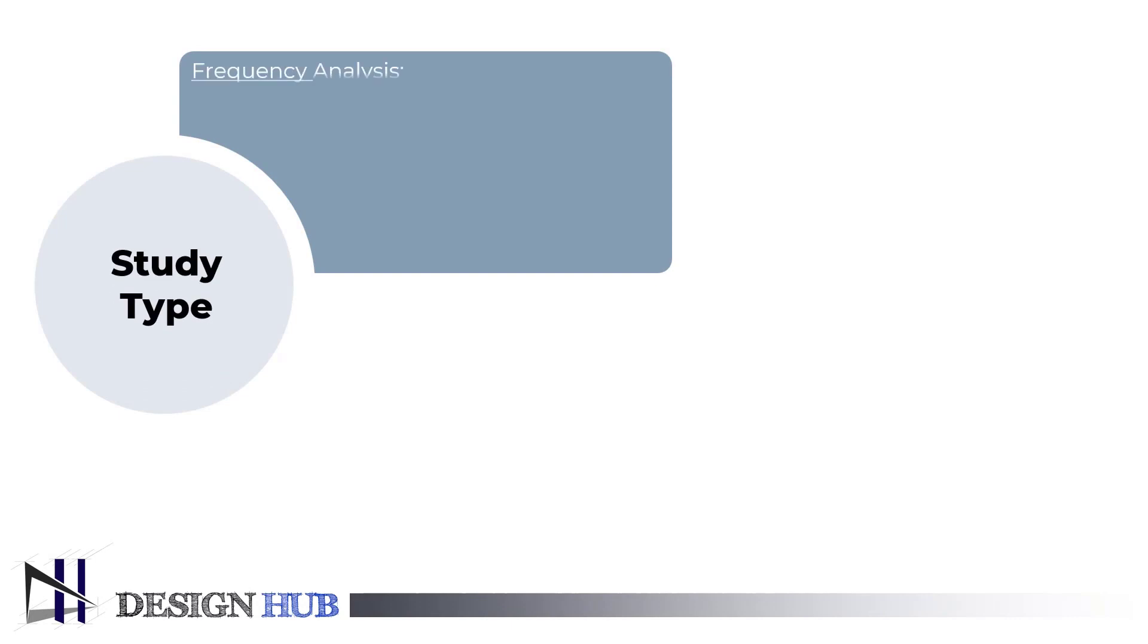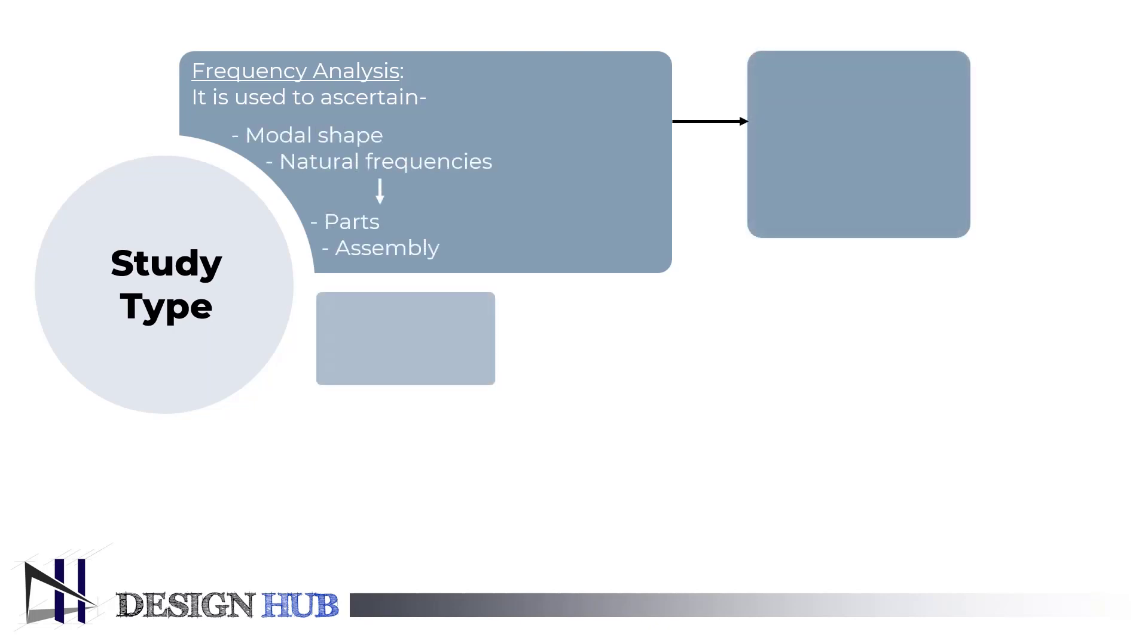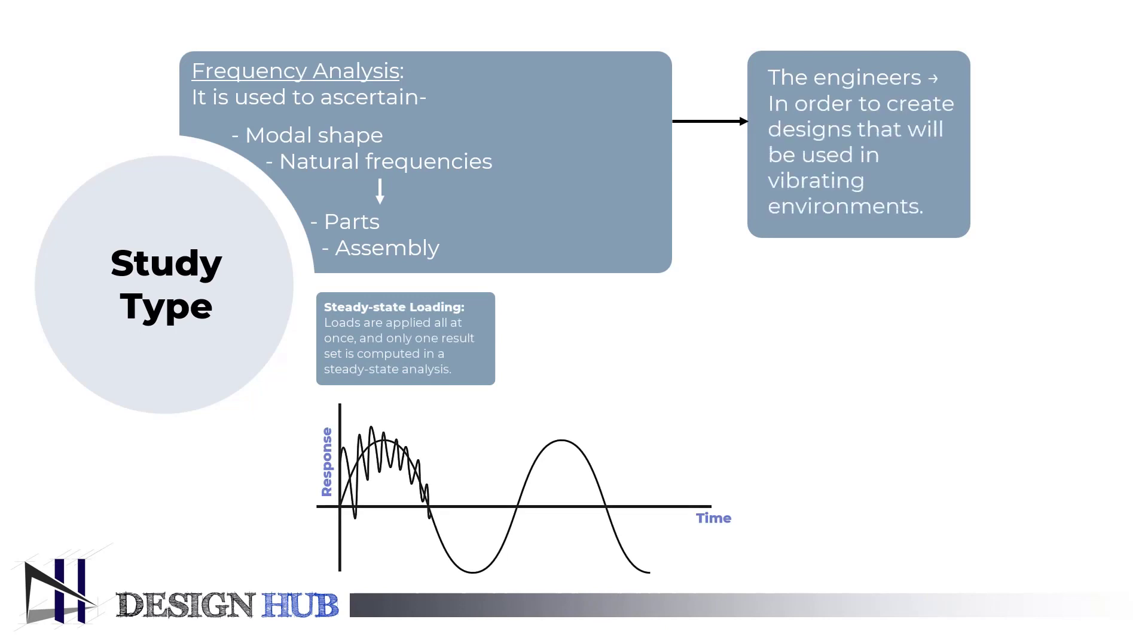Now, the fifth study type is the frequency analysis. This test, which is also referred to as modal analysis, is used to ascertain the modal shape and natural frequencies of both parts and assemblies. The steady-state response resulting from a sinusoidal load applied to a structure at a single frequency is determined using FEA's frequency response analysis. It is a specialized form of transient response analysis that solves a particular kind of model very effectively. An engineer must have this knowledge in order to create designs that will be used in vibrating environments or subjected to vibration inputs.